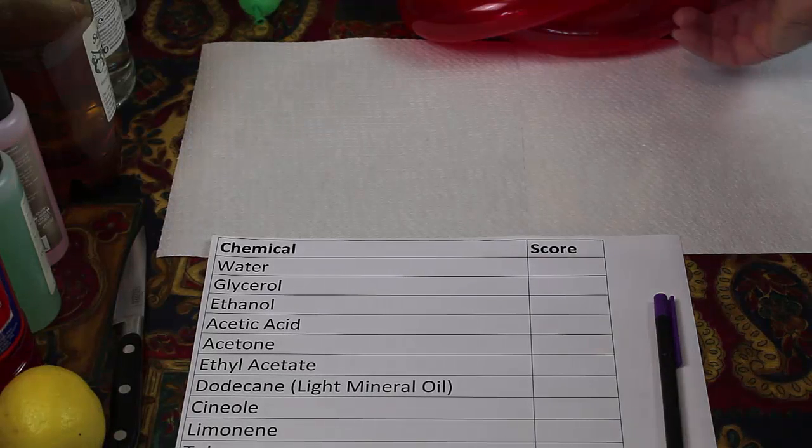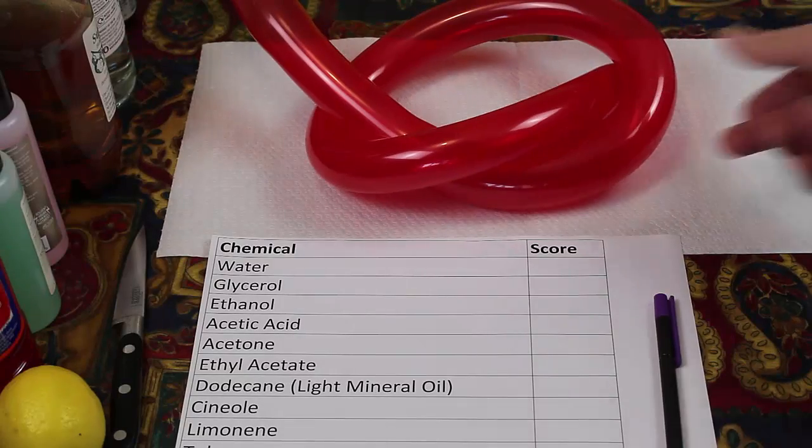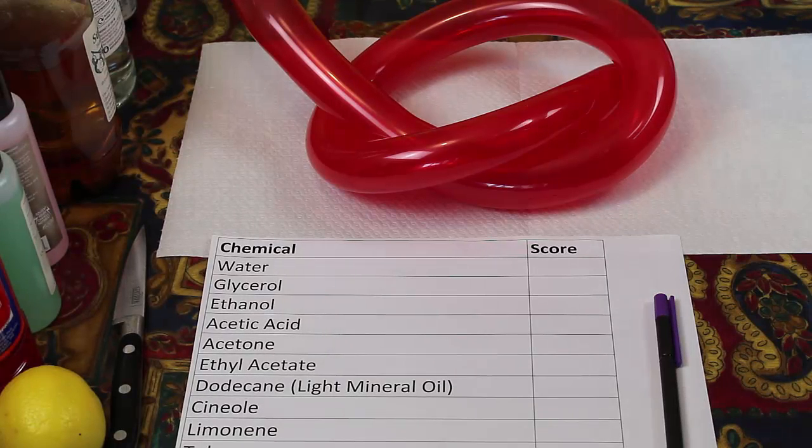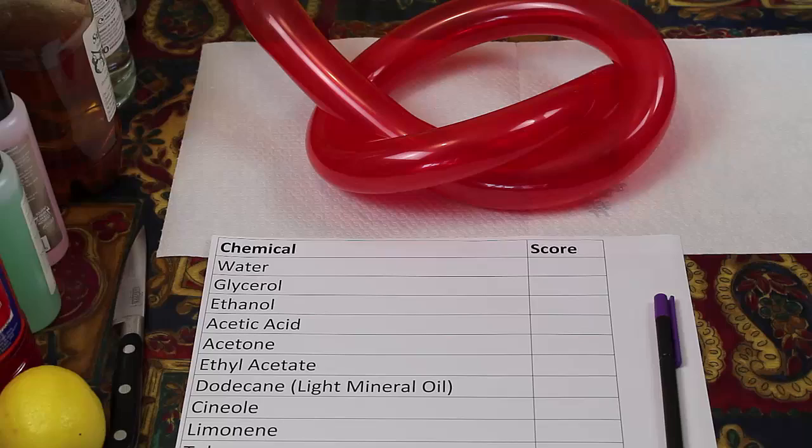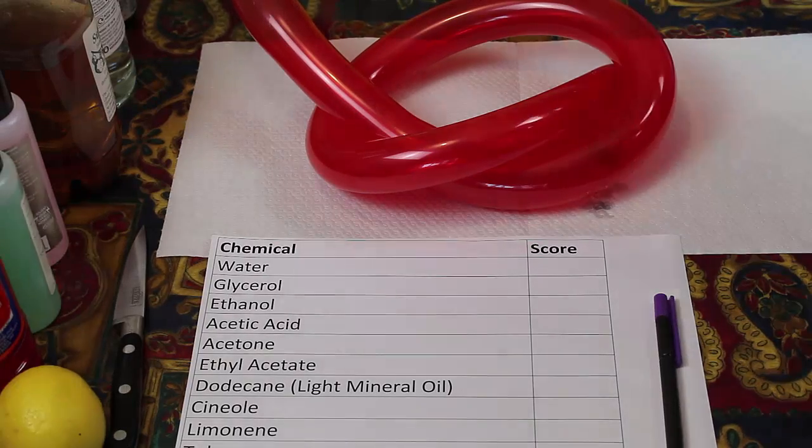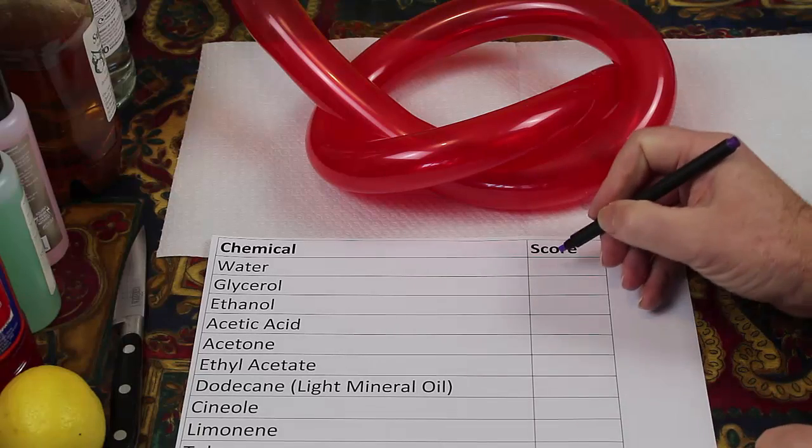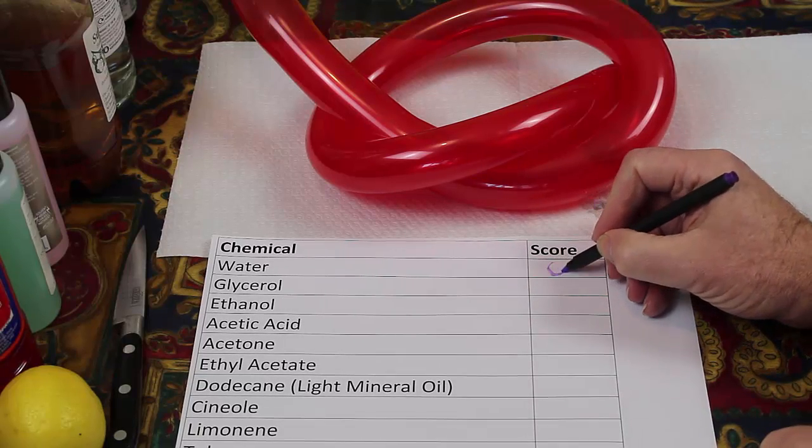I have some polyisoprene and I test it with some chemicals. The first chemical is some water and of course I pour it over, the water does nothing. So I can say that the polymer, the polyisoprene, is not happy in water so I give it a zero.